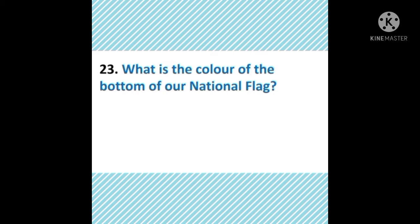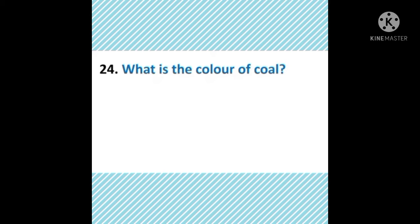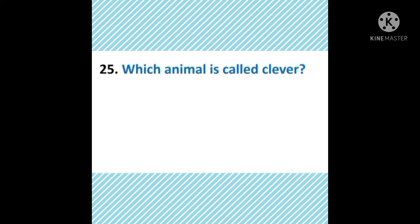What is the color of the bottom of our national flag? हमारे national flag के bottom का color क्या है? Bottom यानि जो सबसे नीचला part होता है — green. Orange, white and then green. Bottom green होता है. What is the color of coal? Coal यानि कोयला — कोयले का color क्या होता है? The answer is black. Black color होता है कोयले का।